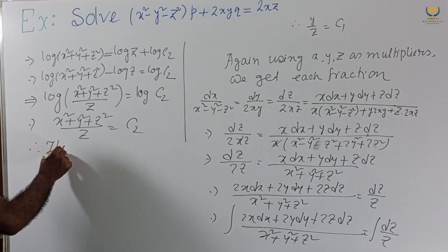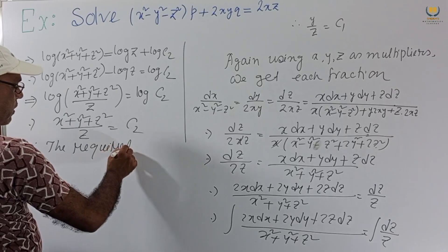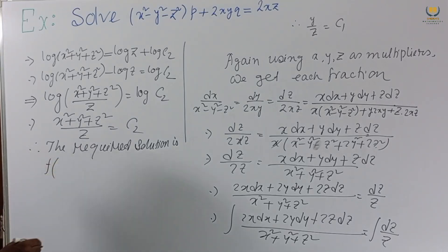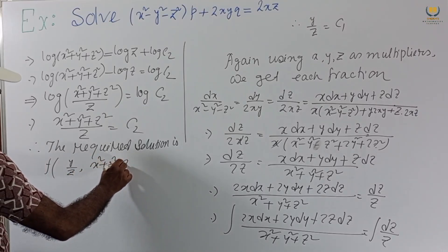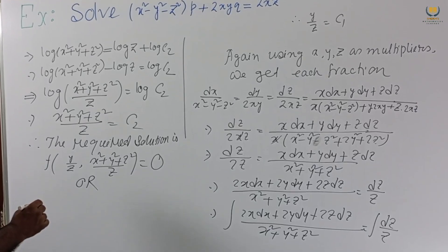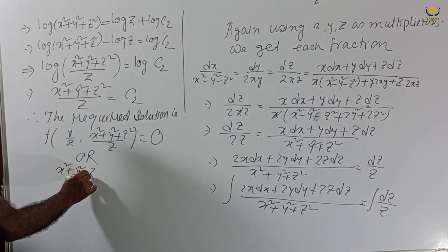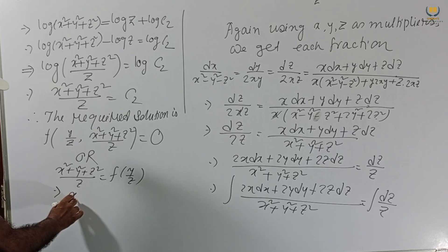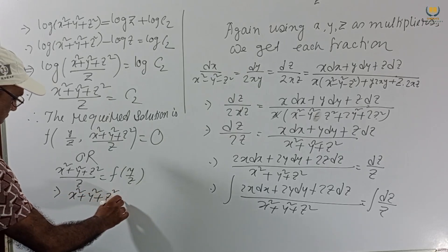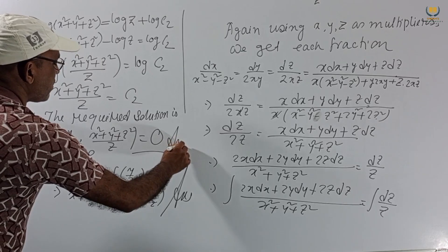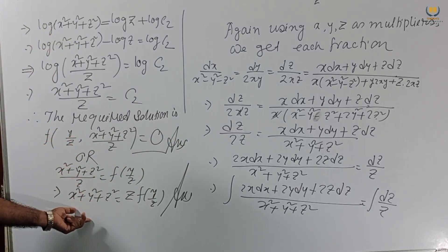Therefore, the required general solution is f(y/z, (x²+y²+z²)/z) = 0. Equivalently, (x²+y²+z²)/z = f(y/z), which implies x²+y²+z² = z·f(y/z). Either form is the final answer.